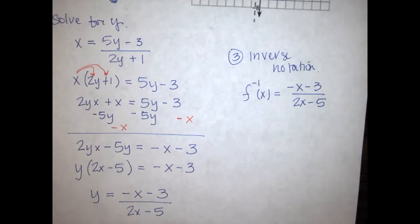Step three — inverse notation. Replace y with f⁻¹(x): f⁻¹(x) equals (negative x minus 3) over (2x minus 5). That is everything needed for this problem.